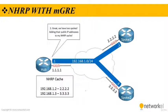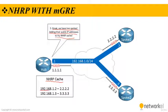On the second step, the hub, which is the NHRP server, creates a mapping between the public IP addresses and the IP addresses of the tunnel interfaces. The hub receives the registration requests and adds the public IP addresses to its NHRP cache. In the NHRP cache, 1.2 is mapped to 2.2.2.2 and 1.3 is mapped to 3.3.3.3.